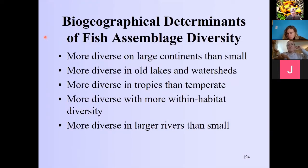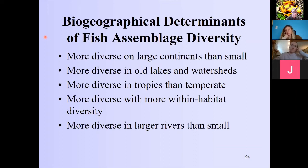For fish diversity, fishes tend to be more diverse on large continents than small, and more diverse on continents than islands — that's the island biogeography principle. They're more diverse in old lakes and watersheds, and more diverse in the tropics than the temperate zone.